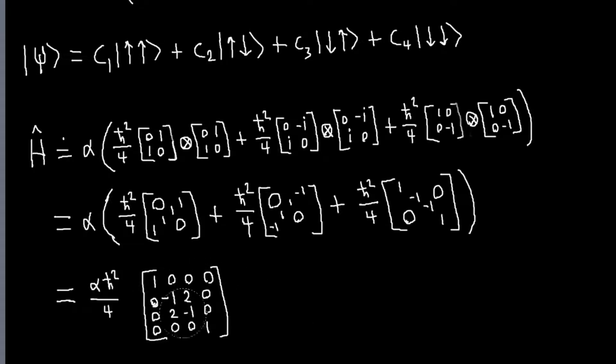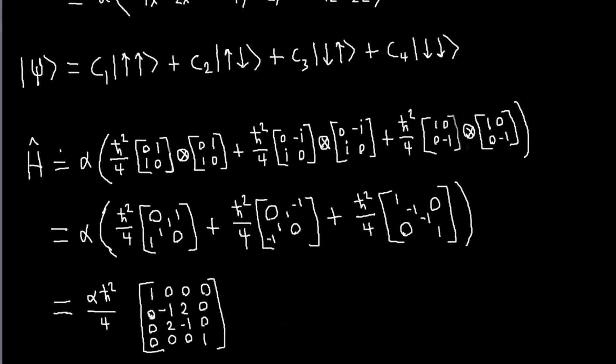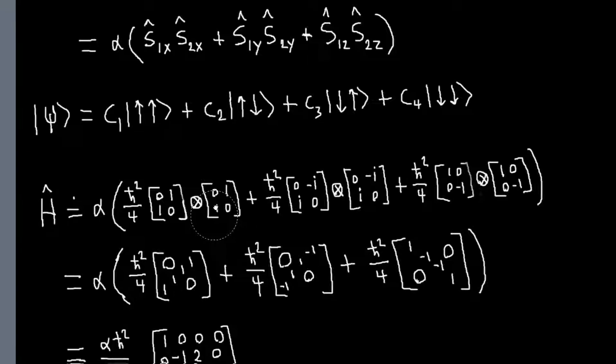All I mean by that is we have some rows and columns where we only have one value on the diagonal. Here we just have a one, and then zeros and zeros, and then here we also have a one, and again zeros and zeros. Basically what that means is that some of these vectors are eigenvectors of our Hamiltonian, specifically the first one and the last one.